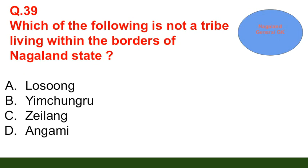Question number 39: Which of the following is not a tribe living within the borders of Nagaland state? Option A: Longsong; option B: Yimchunger; option C: Zeliang; option D: Angami. The correct answer is option A — Longsong.